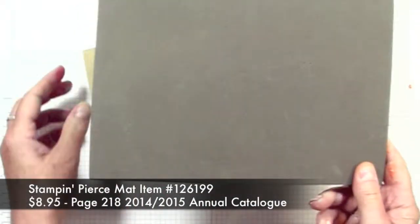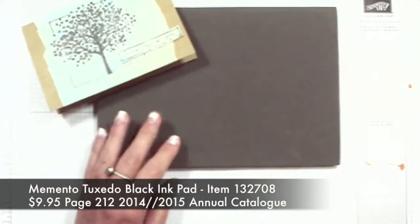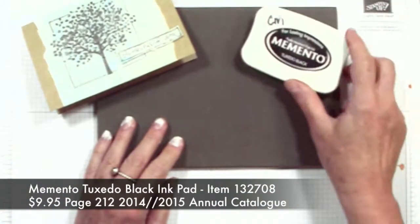Because we're stamping with polymer we'll use the Stampin' Pierce mat to give us a little bit of cushioning when we stamp. We're going to be stamping with the Memento black ink pad.